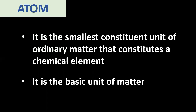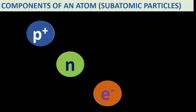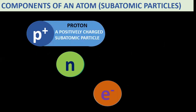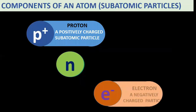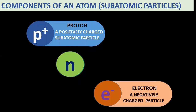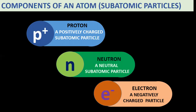So, what are the components of an atom? They are called subatomic particles. We have P+, which stands for proton. A proton is the positively charged subatomic particle. Then we have the electron, which is a negatively charged particle. And the neutron, which is a neutral subatomic particle. So only the proton and electron have a charge.